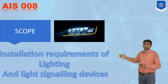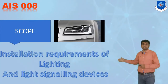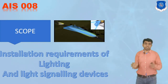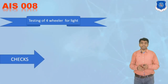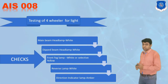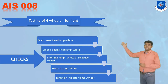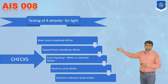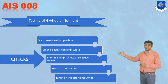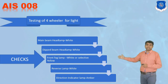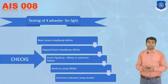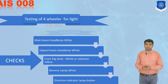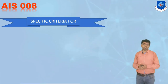The next standard to remember is AIS 008, which is for the installation requirements of all lightings and light signaling devices inside a car. Whenever testing four-wheelers for lighting, some of the checks required as per AIS 008 are: the main beam headlamp must be white, the dipped beam headlamp must also be white, the fog lamp must be white or selective yellow, the reverse lamp must be white, and the direction indicator lamp must be amber.